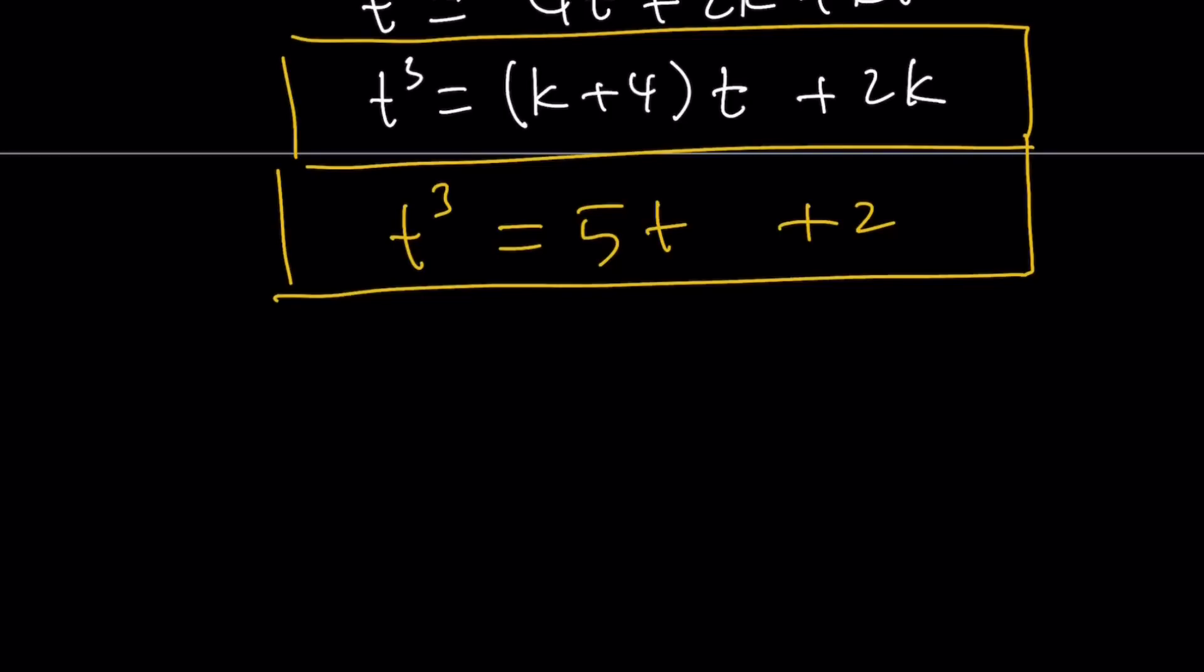So what is that supposed to mean? It means that the coefficient of t needs to be 5. So this needs to be 5, but this needs to be 2 at the same time. And that's possible if k is equal to 1, we are good to go.